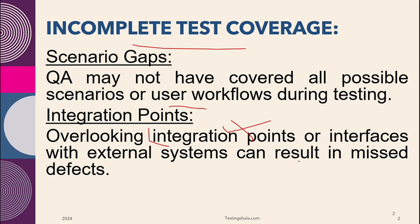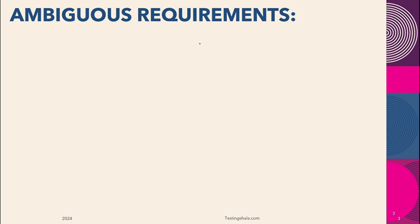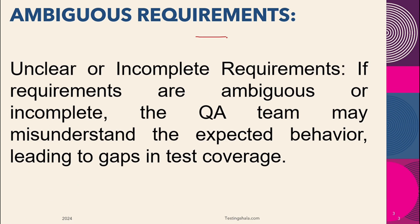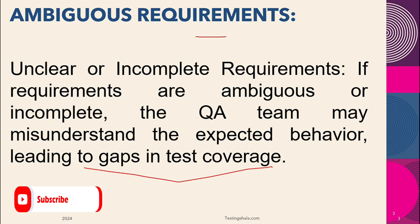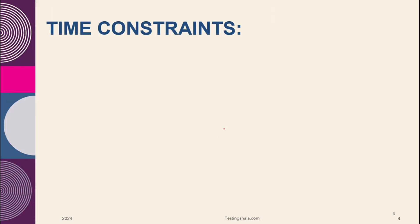The second reason is ambiguous requirements. If there is a lack of clarity in the requirements, or if requirements are unclear, there is a possibility that we may misunderstand some of the expected behavior — and because of that, we may end up missing some defects.